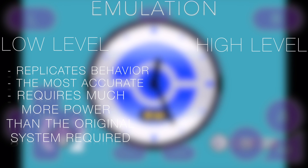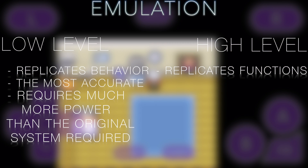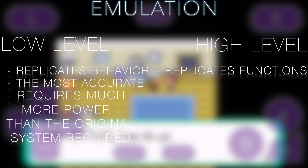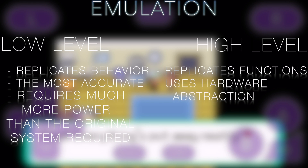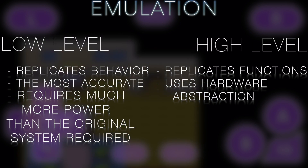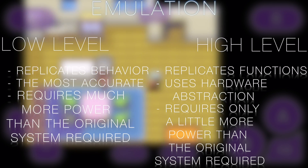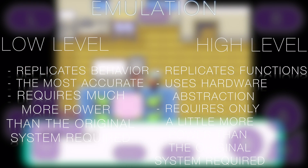So we looked at low-level emulators. There's also something called high-level emulators, which replicate the functions instead of the behavior of the system you're trying to emulate. This is done by using hardware abstraction, which basically means it provides a set of actions that a developer commonly uses and then does all the little details automatically. The benefit of this is that it only requires a host that is a little bit more useful than the original system.